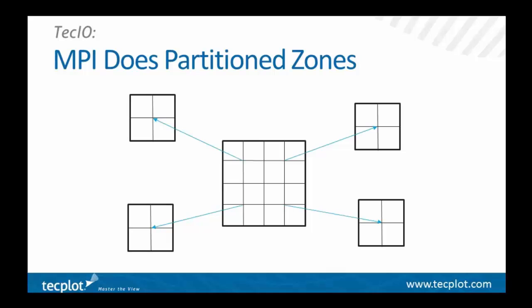A schematic shows an original zone of 4x4 cells divided into four pieces, each presumably being calculated by a separate processor on a parallel machine. Each processor can write out its individual partition via TechIO MPI, and then TechPlot, when it reads the file, will reassemble those pieces into a single zone.